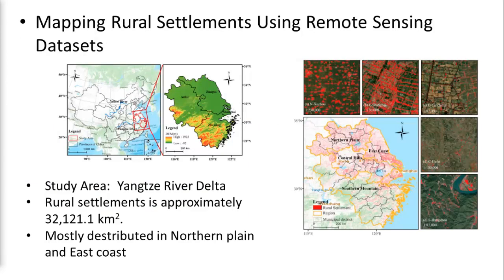Another interesting case study conducted in Google Earth Engine is mapping rural settlements using remote sensing datasets. In 2020, the platform was used to map rural settlements using multi-source remote sensing datasets in the Yangtze River Delta. Even though it has not been used as widely as other remote sensing and GIS software like ERDAS and ArcGIS, this is a very powerful platform for anyone who wishes to perform spatial data analysis.